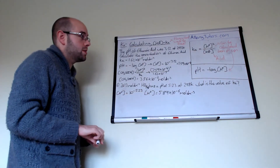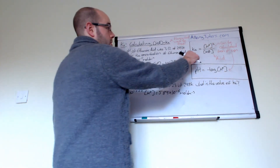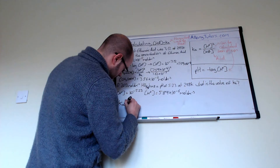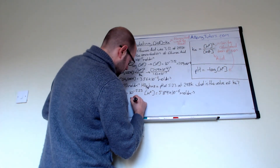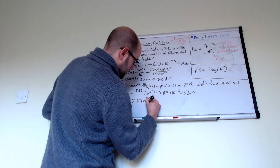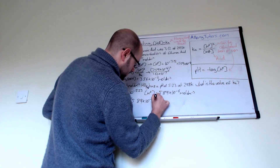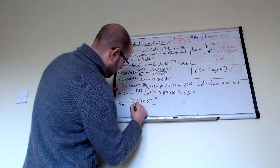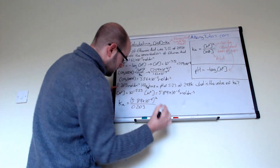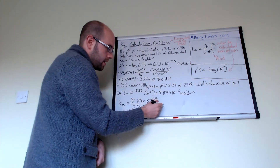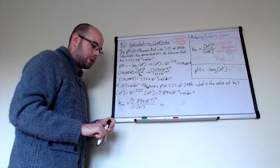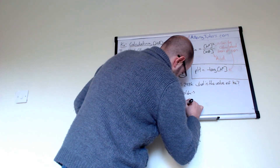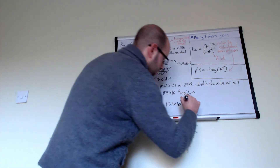Now we know the concentration of H⁺, we can put it into our Ka expression. Because we're working out Ka, we don't need to rearrange it, which makes it a little bit easier. Ka equals H⁺ squared — (5.89 × 10⁻⁶)² — divided by the concentration of the acid, which is 0.203. Putting that in the calculator, Ka equals 1.71 × 10⁻¹⁰ moles per decimetre cubed.